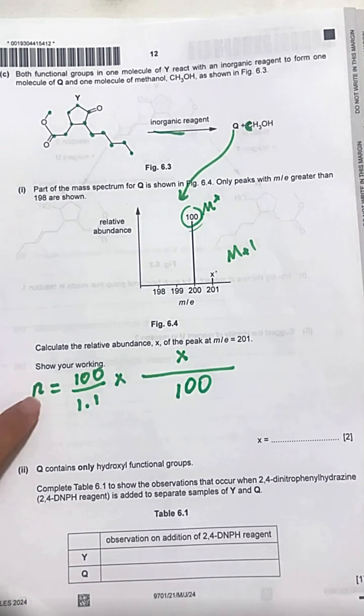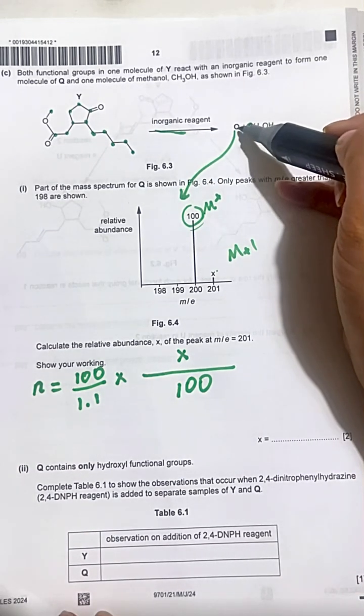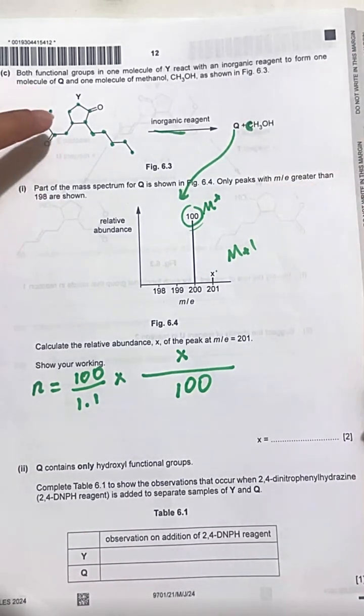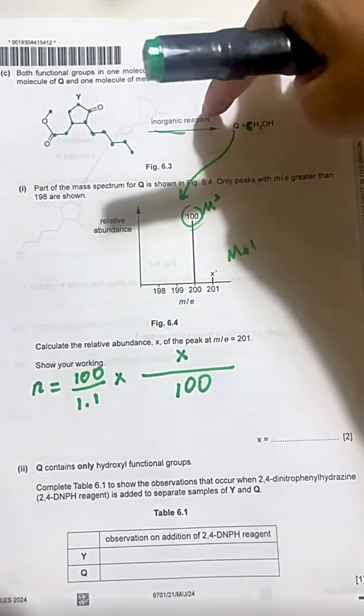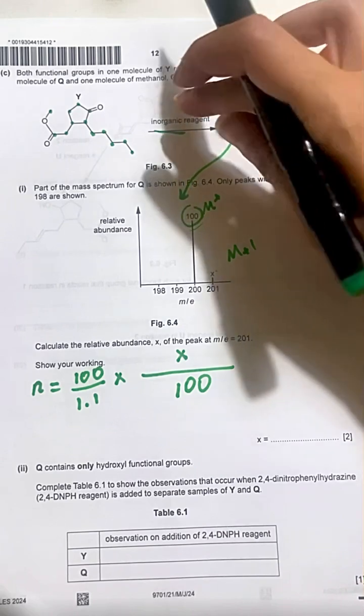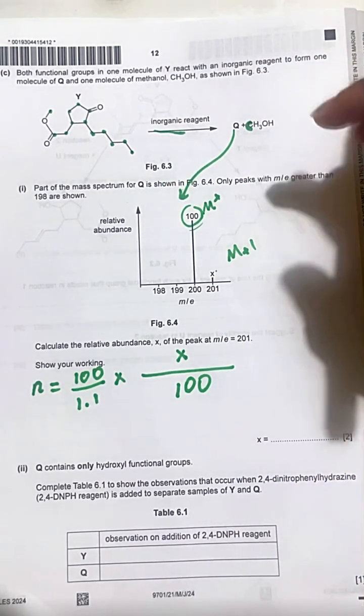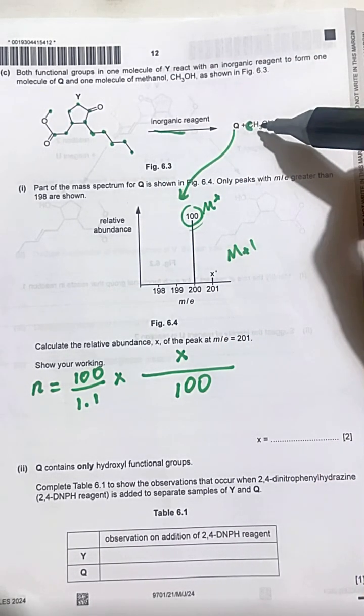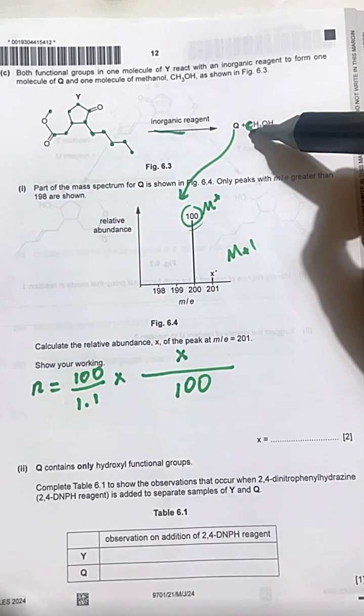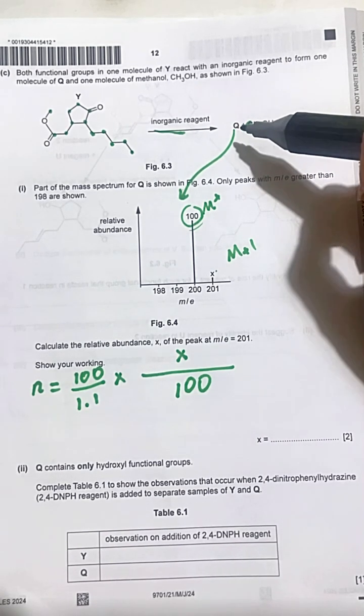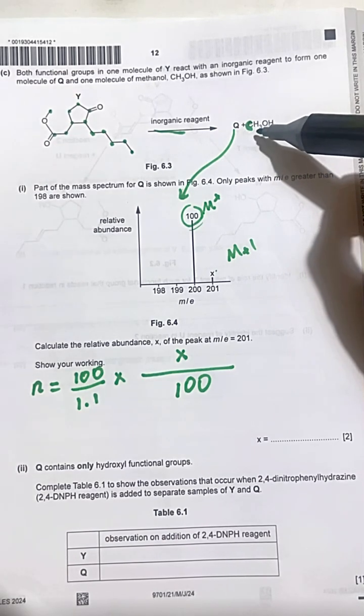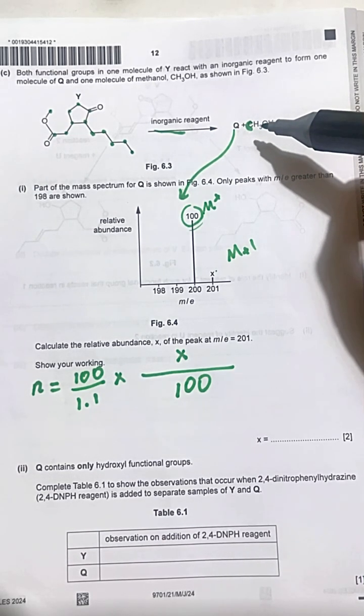How to find X? We must know how many carbons are in this molecule Q. Going back, it was Y that reacts with inorganic reagent, so there is no carbons in it to produce Q and methanol. Methanol has 1 carbon, so this means Q is the same as Y minus 1 carbon.